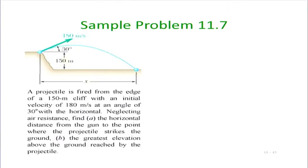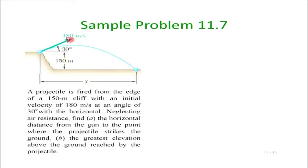The problem: a projectile is fired from the edge of a 150-meter cliff. The origin is fixed at the top of the cliff, the projectile is fired at an angle of 30 degrees with respect to the horizontal at a speed of 180 meters per second. We neglect air resistance and need to find the horizontal distance where the projectile strikes the ground.